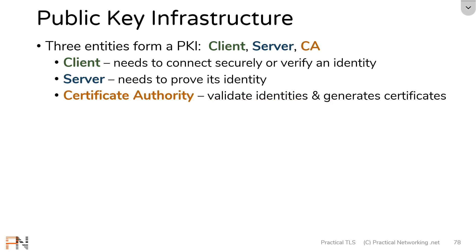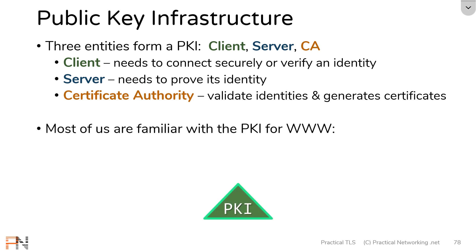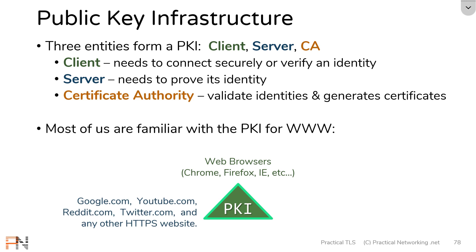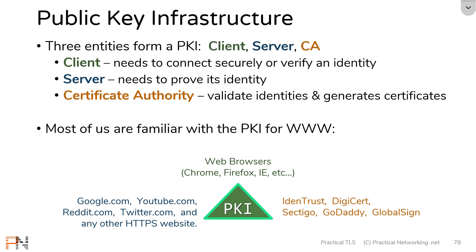Most of us are familiar with the PKI for the World Wide Web. In the World Wide Web PKI, the clients are the web browsers — things like Chrome, Firefox, or Safari — and also anything in the Internet of Things that might be making a secure TLS connection. The servers are the different websites out there, things like google.com, your banking website, your email provider, etc. And the certificate authorities are any of the big public web certificate authorities. The top five we discussed have signed 98% of certificates out there.